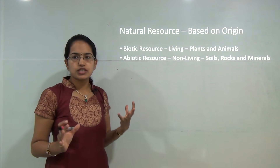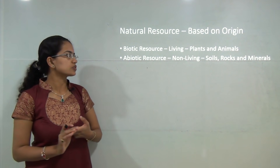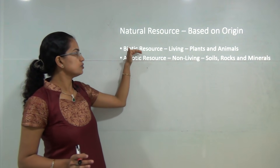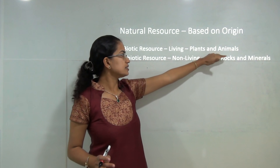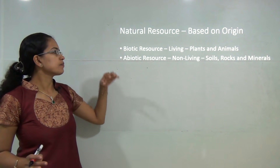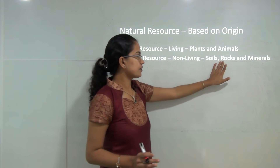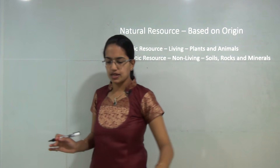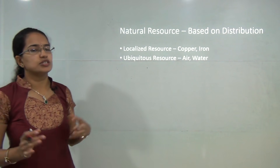Based on the origin of a resource, there can be two types: biotic or abiotic. Biotic resources are those derived from living plants or animals — derived from living organisms. Abiotic resources are non-living. Examples of abiotic resources include soil, rocks, and minerals. The next classification is based on distribution.